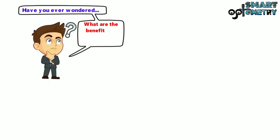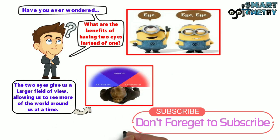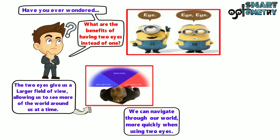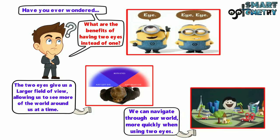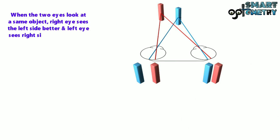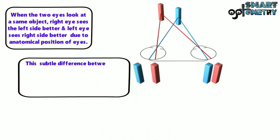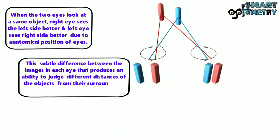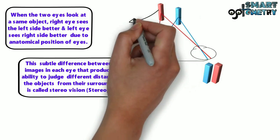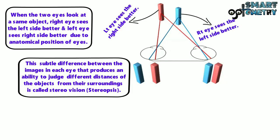Have you ever wondered what are the benefits of having two eyes instead of one? The two eyes give us a larger field of view, allowing us to see more of the world around us at a time, and we can navigate more quickly. When the two eyes look at the same object, the right eye sees the left side better and the left eye sees the right side better due to the anatomical position of the eyes. This subtle difference between the images in each eye, which produces an ability to judge different distances of objects from their surroundings, is called stereo vision or stereopsis.